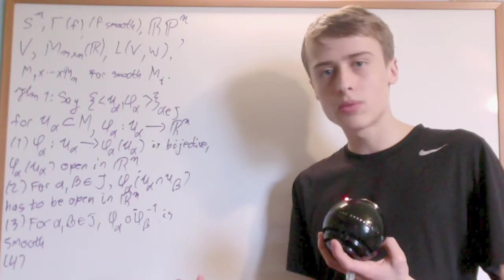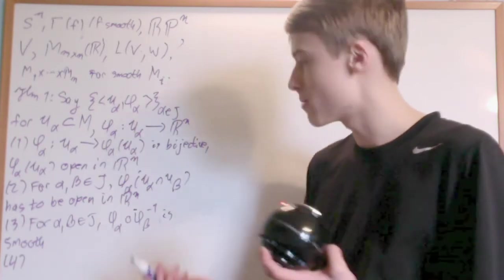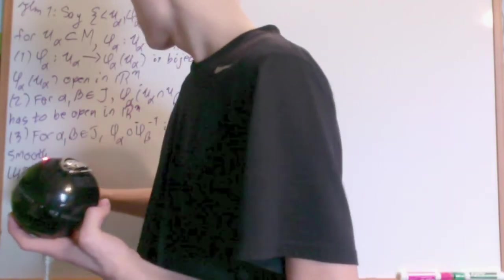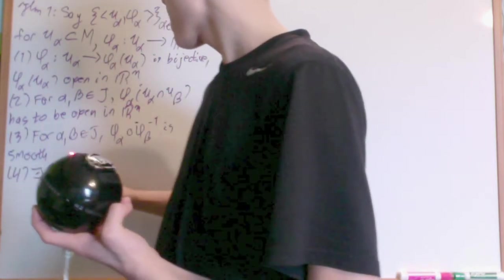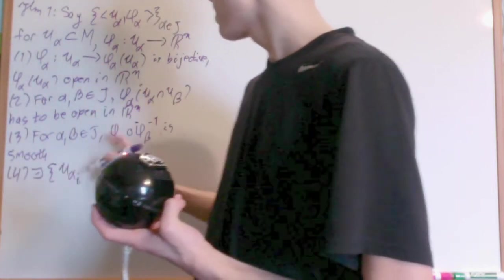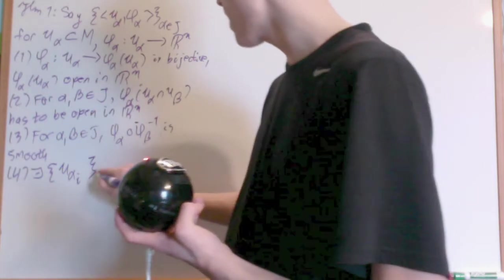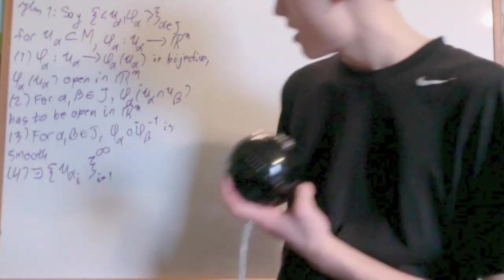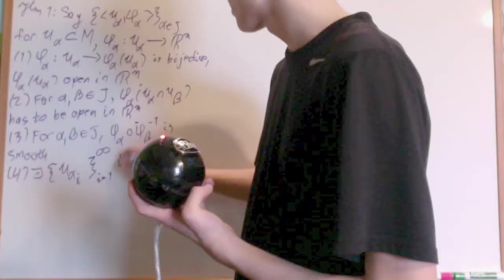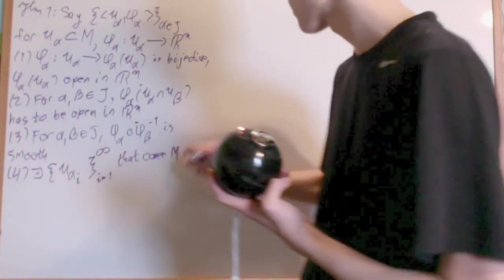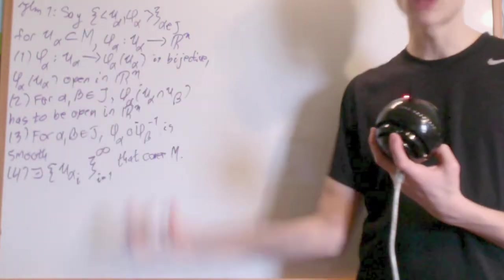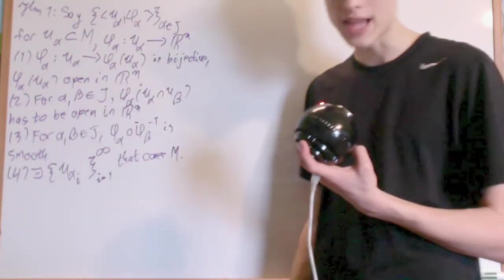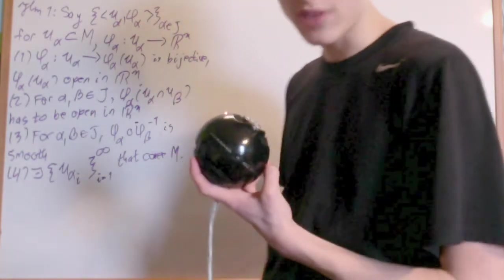So four is that it has a countable basis, practically is what it means, is that there exists a countable collection of U_alpha_I from I equals one to infinity. This is just a countable collection of these sets that cover M, basically meaning countably many of these open sets cover the space M, or the set M. Right now it's a set, we'll make it into topological space afterwards.